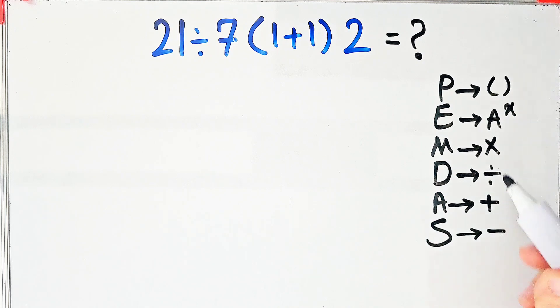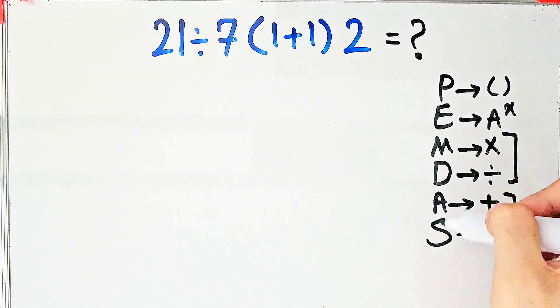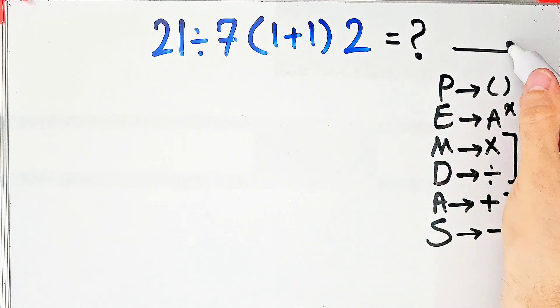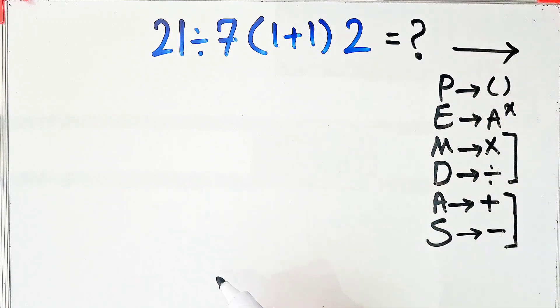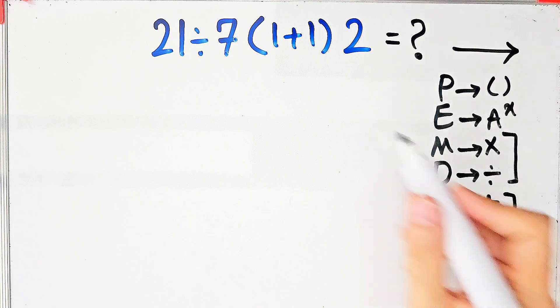Remember that multiplication and division have the same level of priority, and addition and subtraction also have the same priority. When we have both in an expression, we start from the left and simplify.